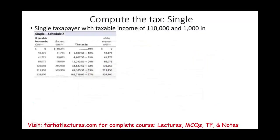Let's look at an example to illustrate the concept. We have a single taxpayer with taxable income of $110,000 and a separate $1,000 in dividends. We're going to compute the taxes for this individual. First, we look at the regular taxable income separate from the dividend. If you haven't learned how to compute taxes yet, go to the prior session.